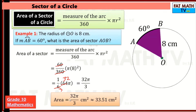The area is 32pi over 3 square centimeters. If you put that into your calculator — 32 times pi divided by 3 — you get approximately 33.51 square centimeters. So you just need to identify the measure of the arc, divide by 360, and multiply by pi r squared, which is the area of the circle that contains the sector.